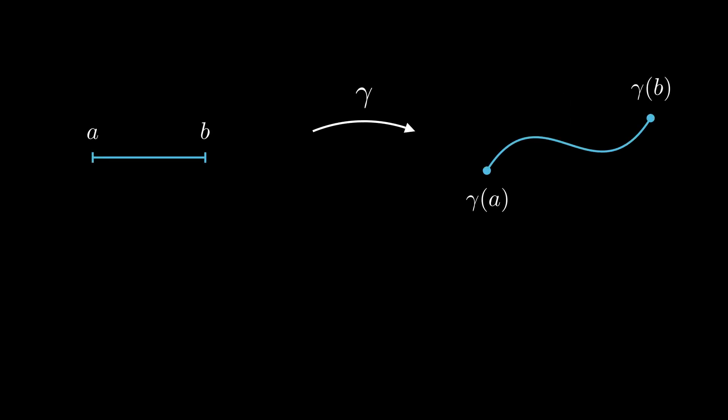The broken line corresponding to the trivial partition is simply a straight line from the initial point of the curve to its final point. By definition, this implies that the length of any curve is at least as long as the distance between its endpoints, with equality only when the curve is a straight line.